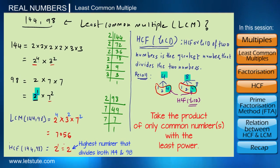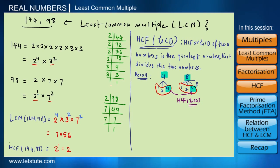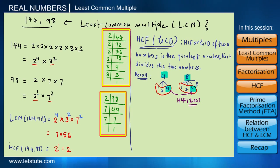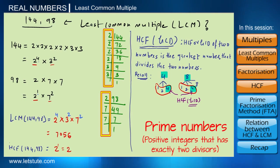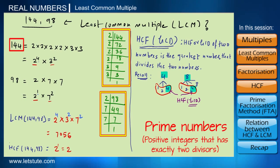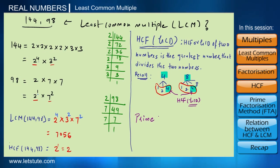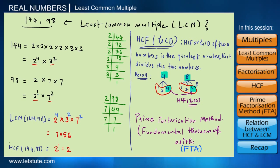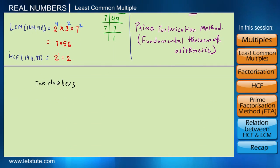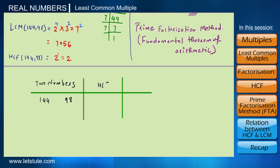This means 2 is the greatest number that divides both 144 and 98 completely. Whenever we factorize any number, we always get factors in terms of prime numbers — here we got 2, 3, and 7, which are all prime numbers. This method is called the prime factorization method, also known as the fundamental theorem of arithmetic. So for 144 and 98, the HCF is 2 and the LCM is 7056.